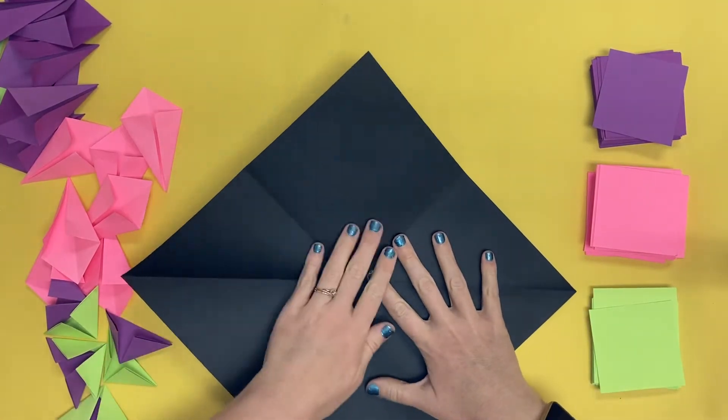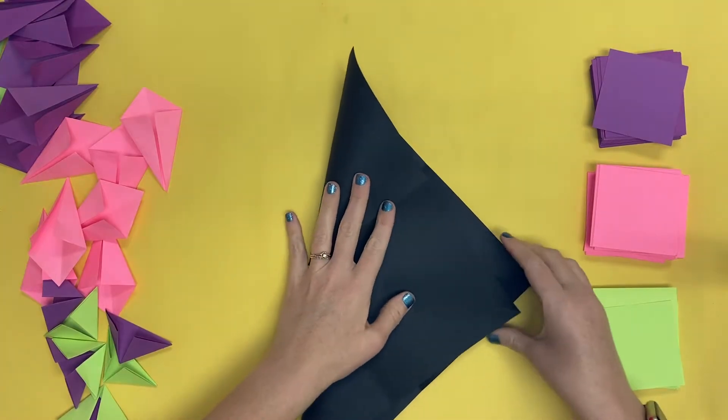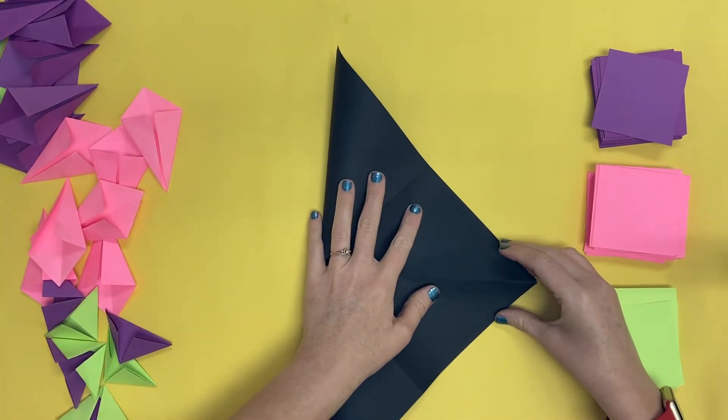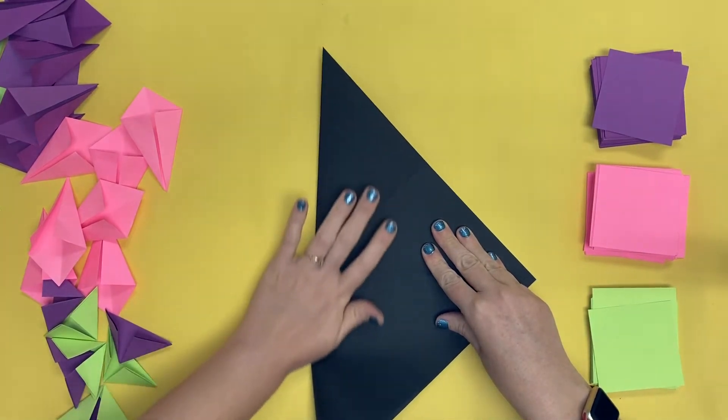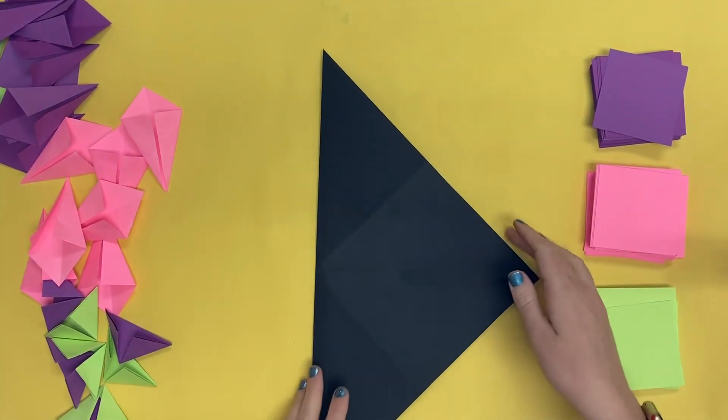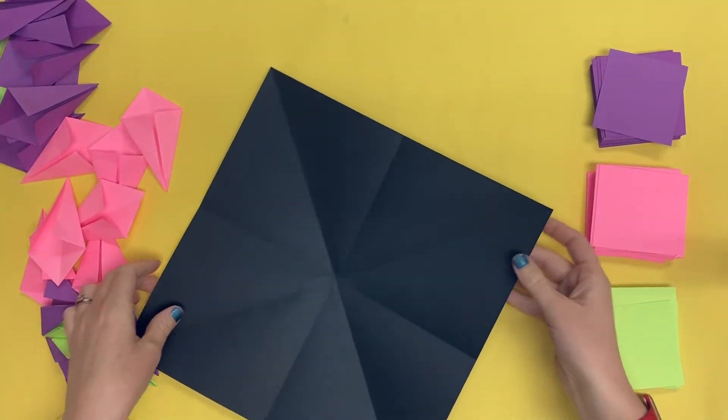One more to go. I'm going to fold corner to corner making sure that they are lined up and then press smooth and crease your paper. We now have eight equal sections.